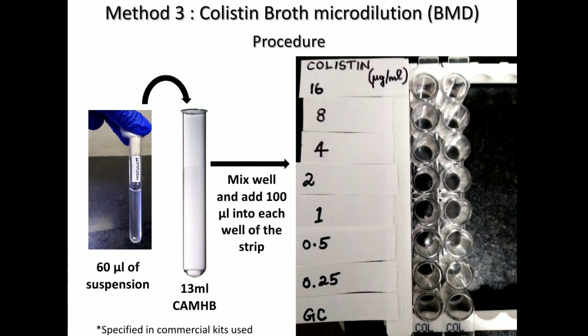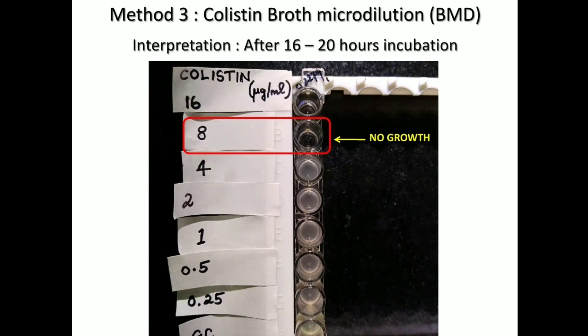You take 60 microliters of the inoculum added to 13 ml of cation-adjusted Mueller-Hinton broth, mix well, and add 100 microliters into each well of the strip. One strip should be used for one isolate. Here we have tested two isolates. Note that the procedure may vary slightly with different kits.